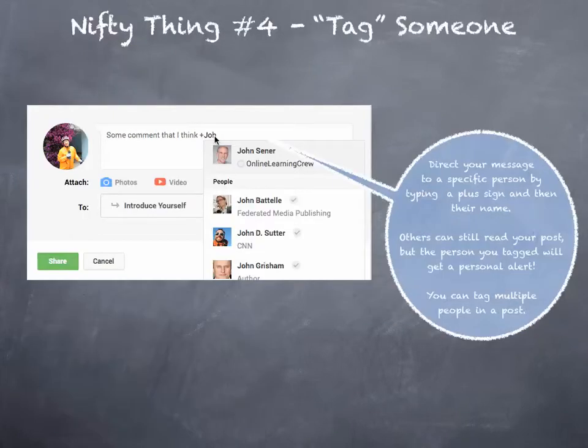Nifty thing number four: tag someone. You can really draw someone's attention to your post or your comment by tagging them. In the body of your message, type a plus symbol and then the person's name, and you'll see a list come up of potential candidates as you're typing out the name. Just select the person that you want to tag — and no space between the plus sign and the name.